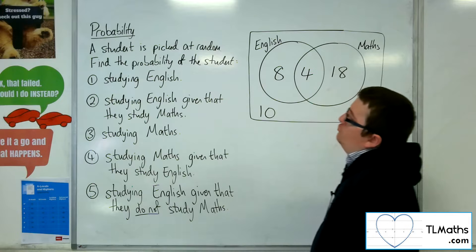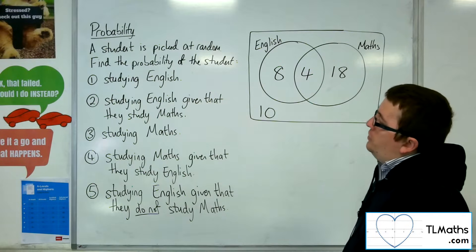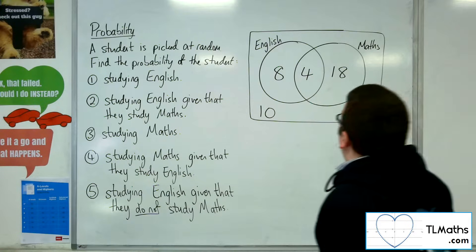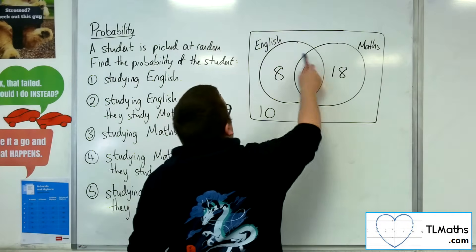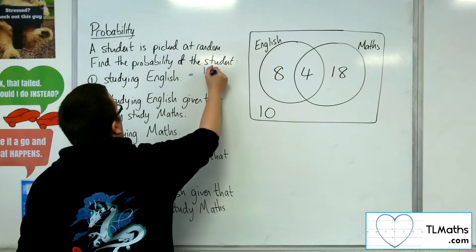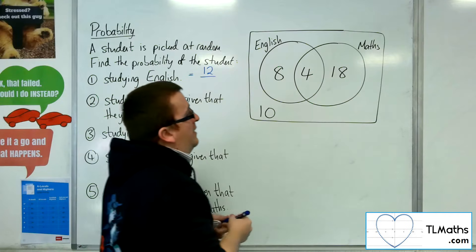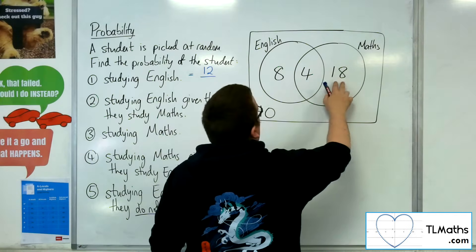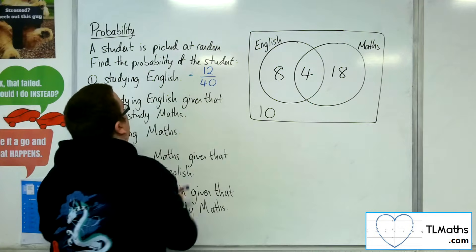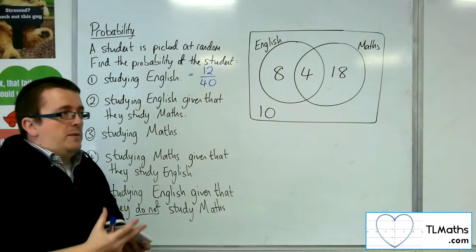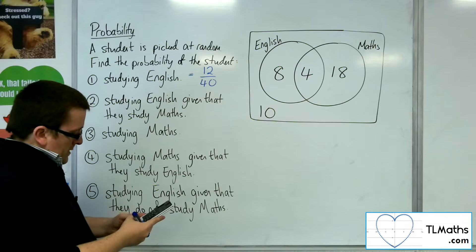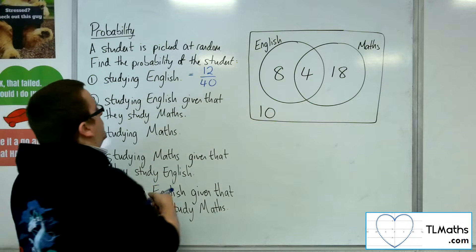A student is picked at random. Find the probability of the student studying English to start off with. That's a nice basic question. It's anyone in this circle. There are 12 students out of — well, we've got 20, 30, 40 students in total. So it'd be 12 out of 40. And of course that can be simplified down to 3 tenths.